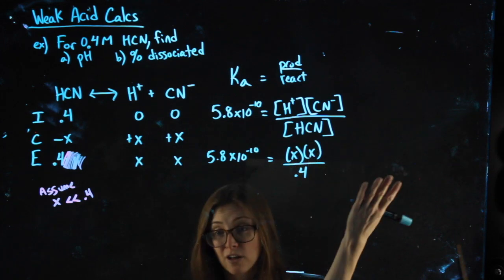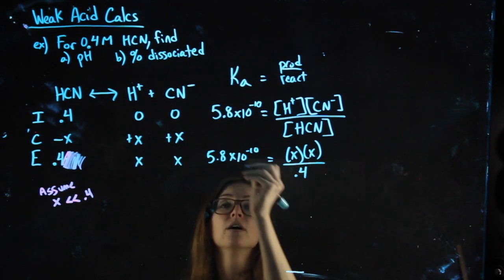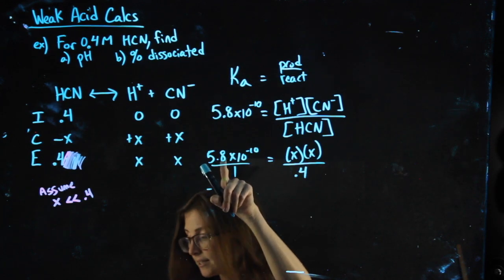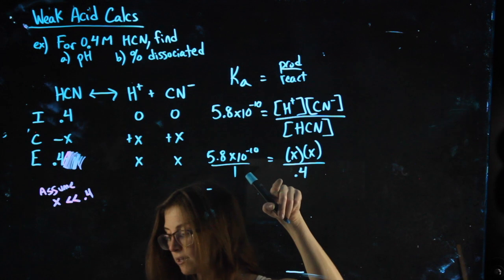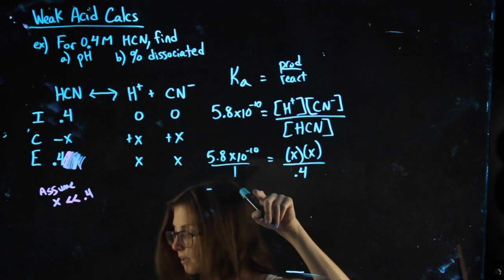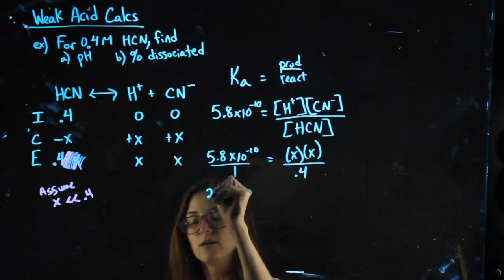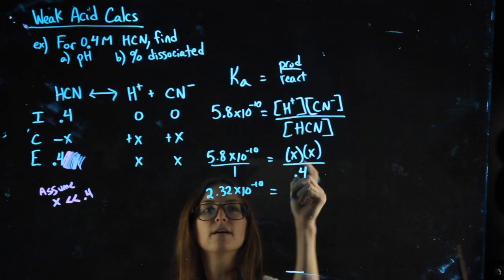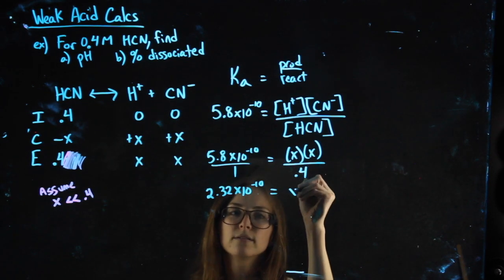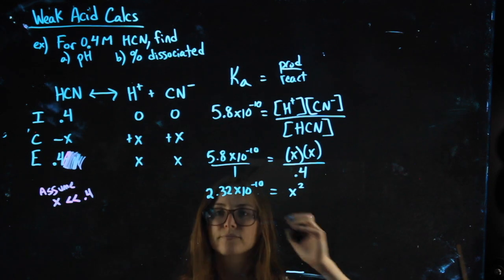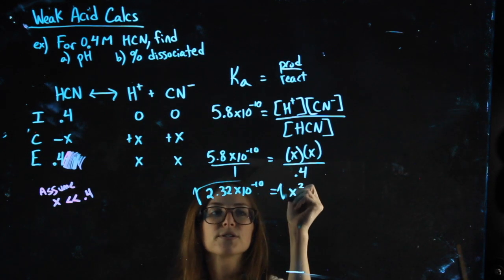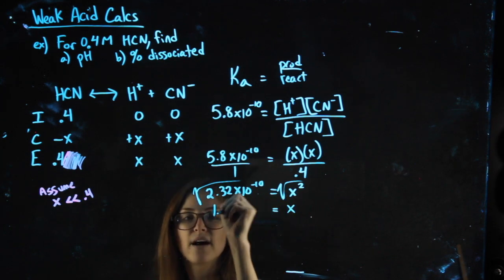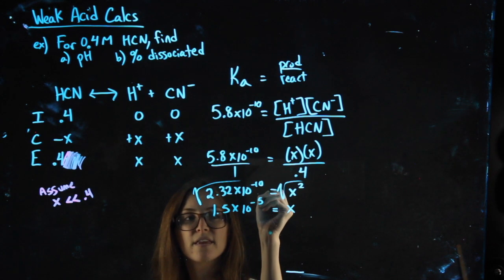Now, here I want to solve for x. That's something I can do. So I'll put this over 1. Cross multiply. 5.8 times 10 to the negative 10th times 0.4 gets me 2.32 times 10 to the negative 10th. x times x times 1 is just x squared. By square root both sides, I'll get an x value of 1.5 times 10 to the negative 5th.